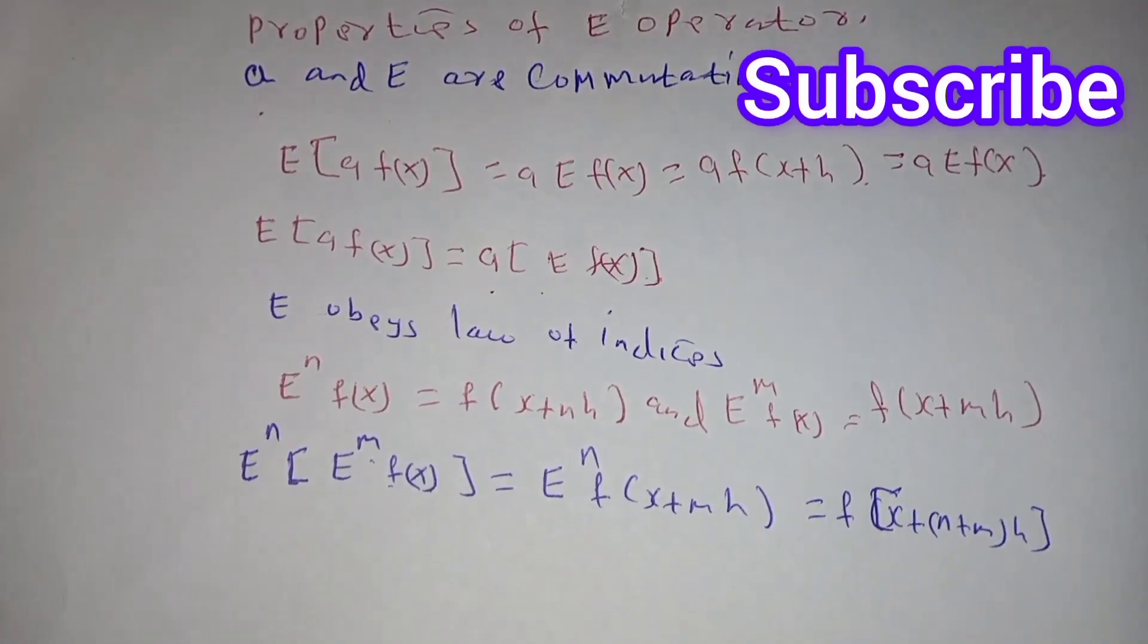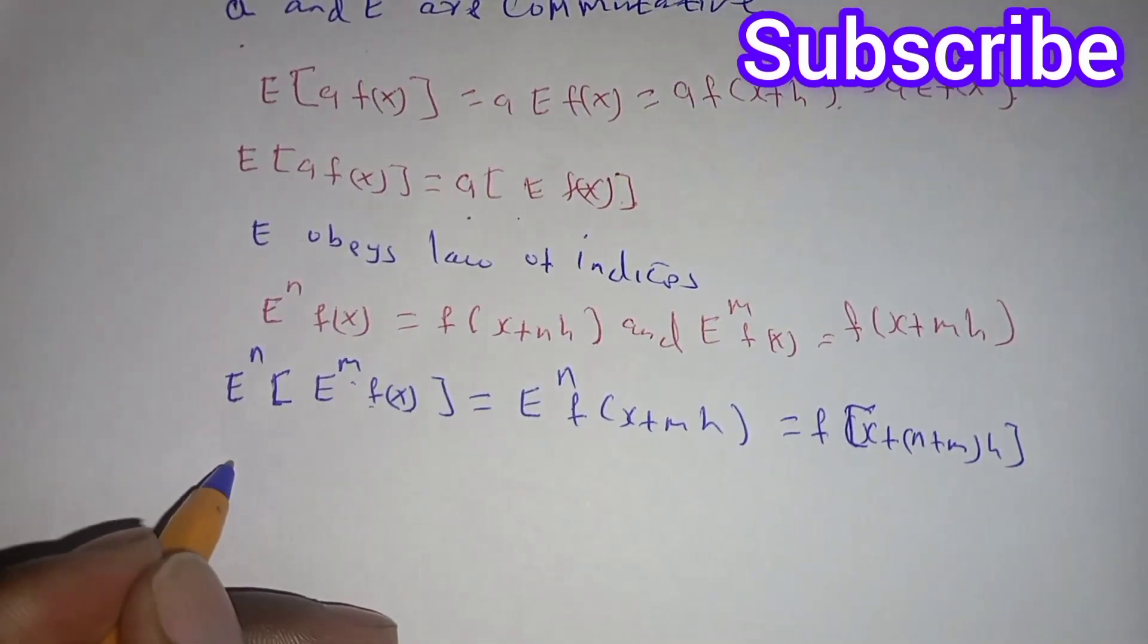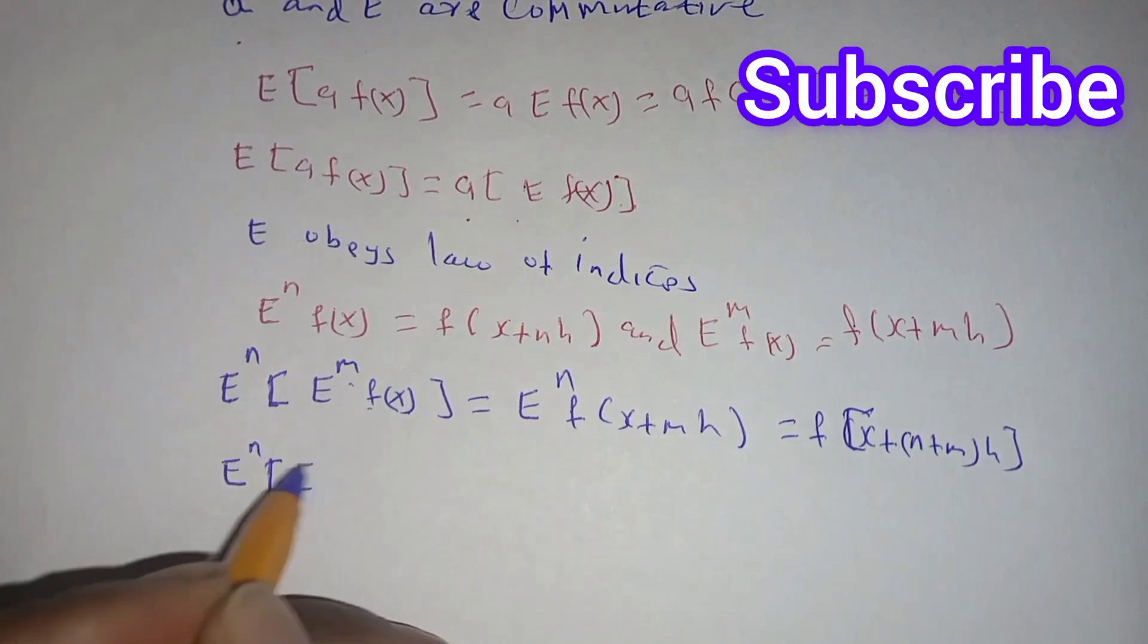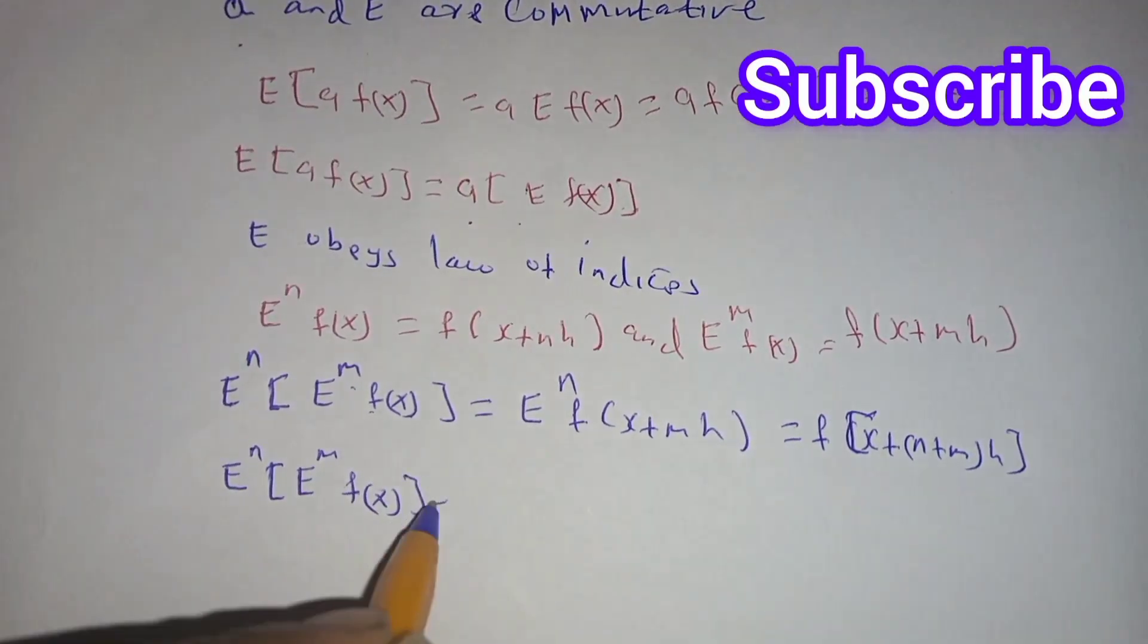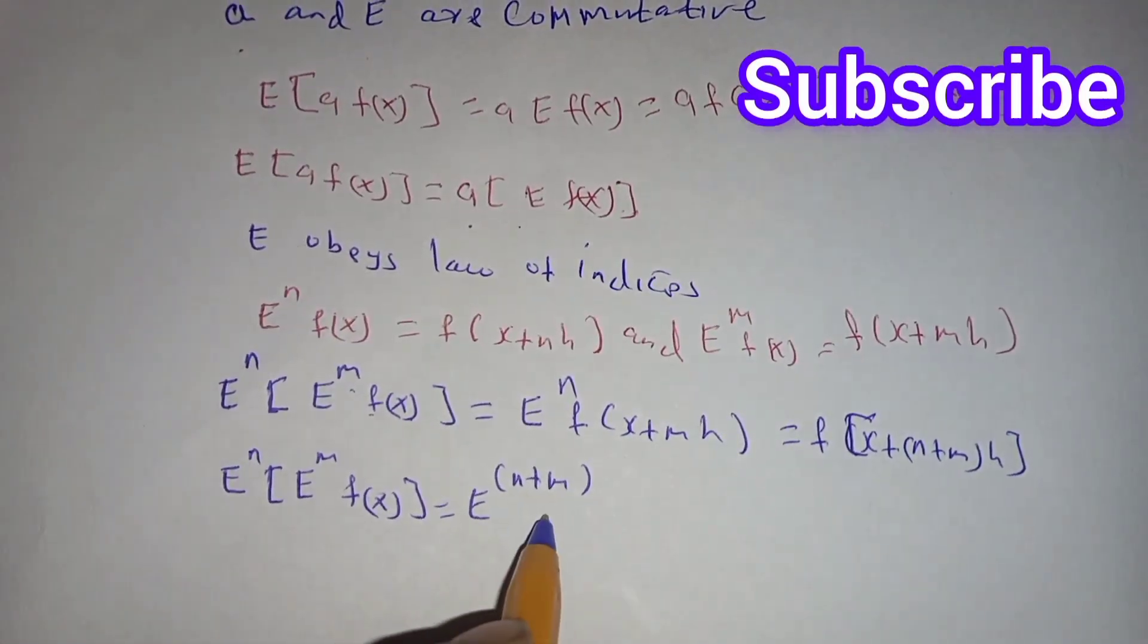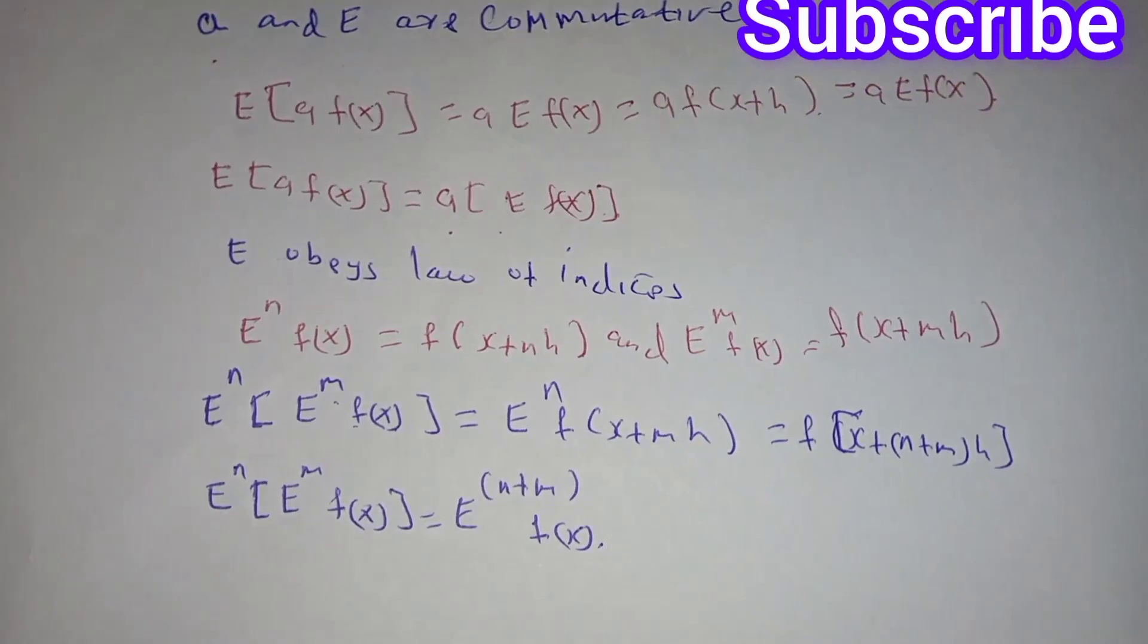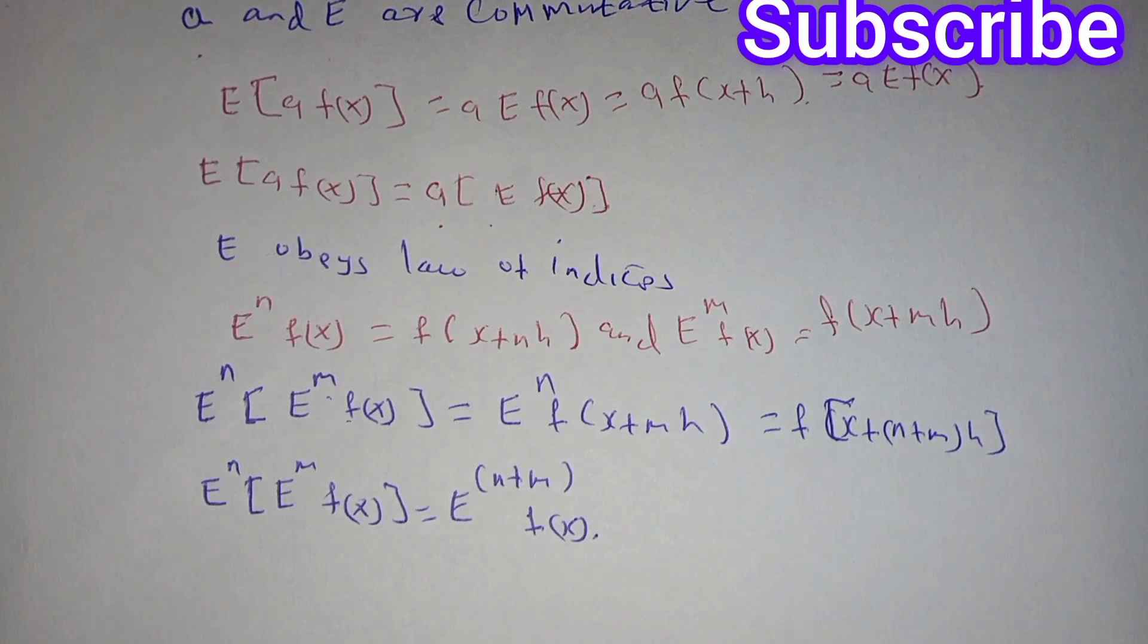Meaning that E of n into bracket E of m of f of x is equal to E to the power n plus m of f of x. Those are the indices, meaning that this implies that the shift operator obeys the power rule of indices.